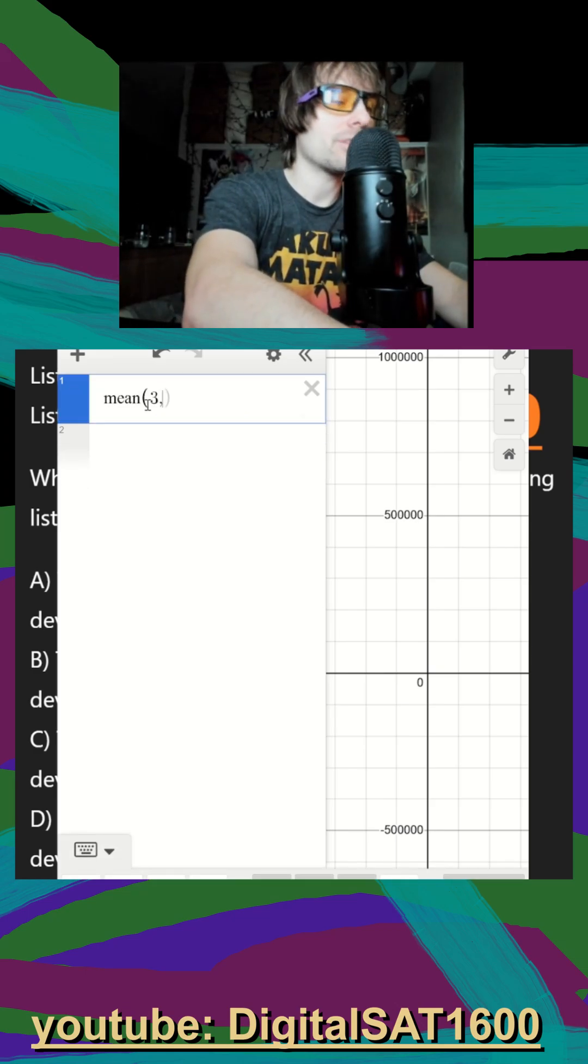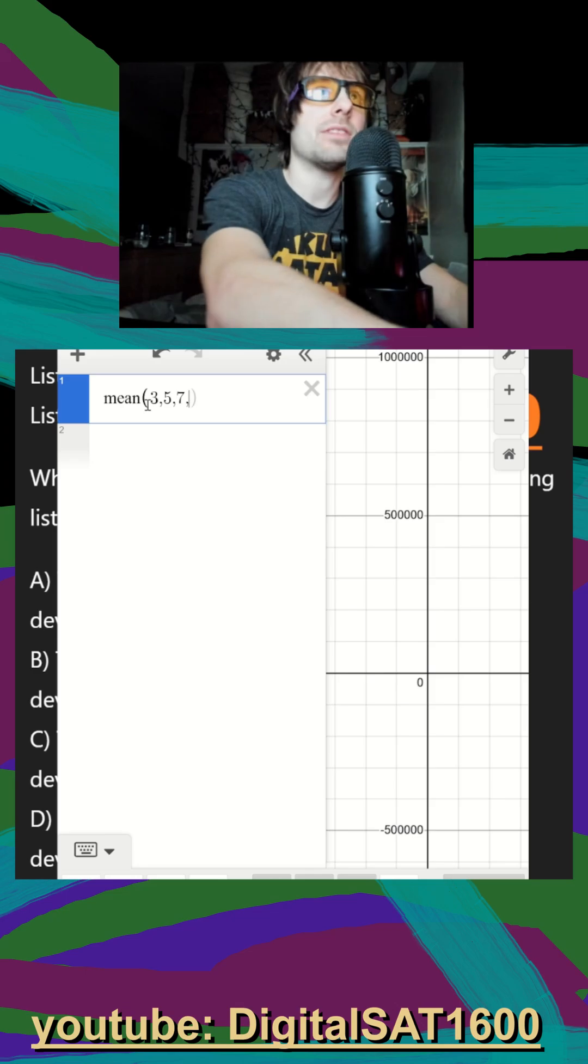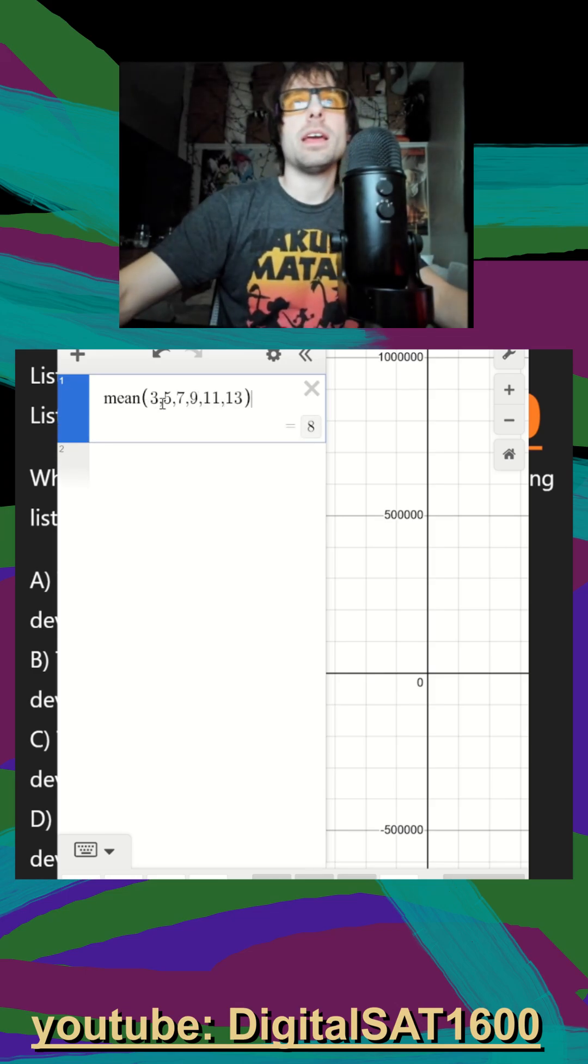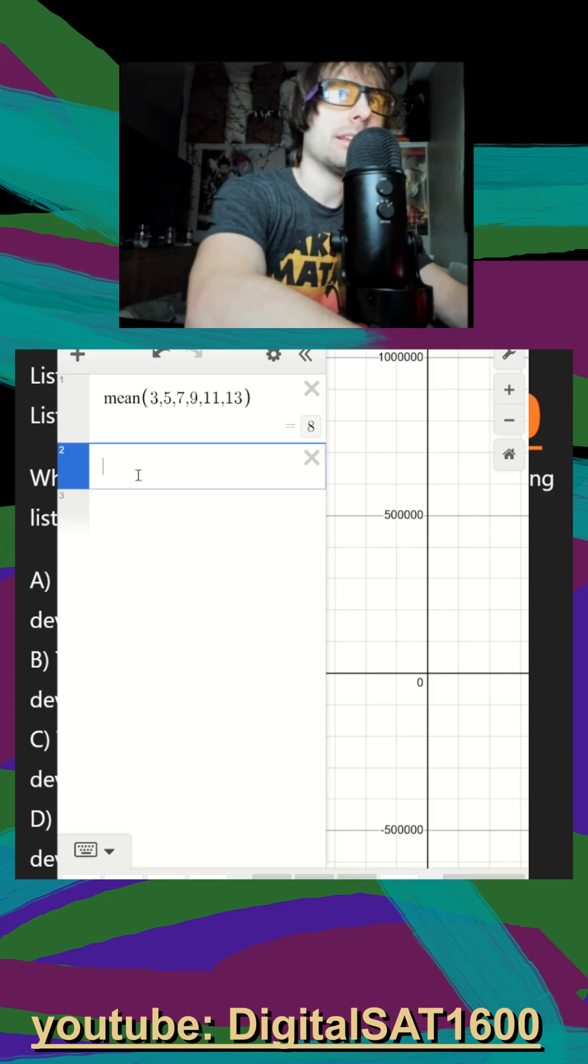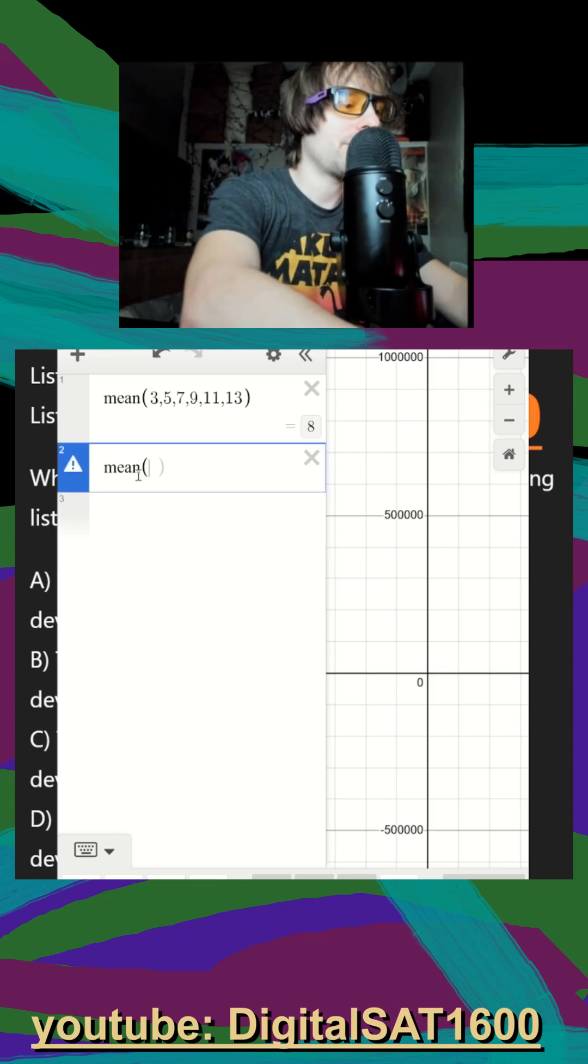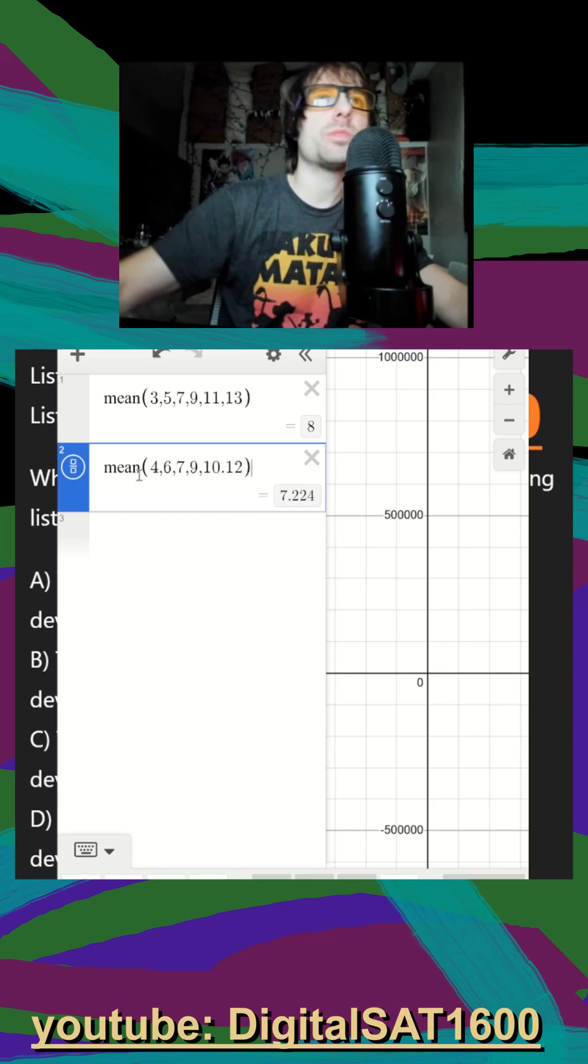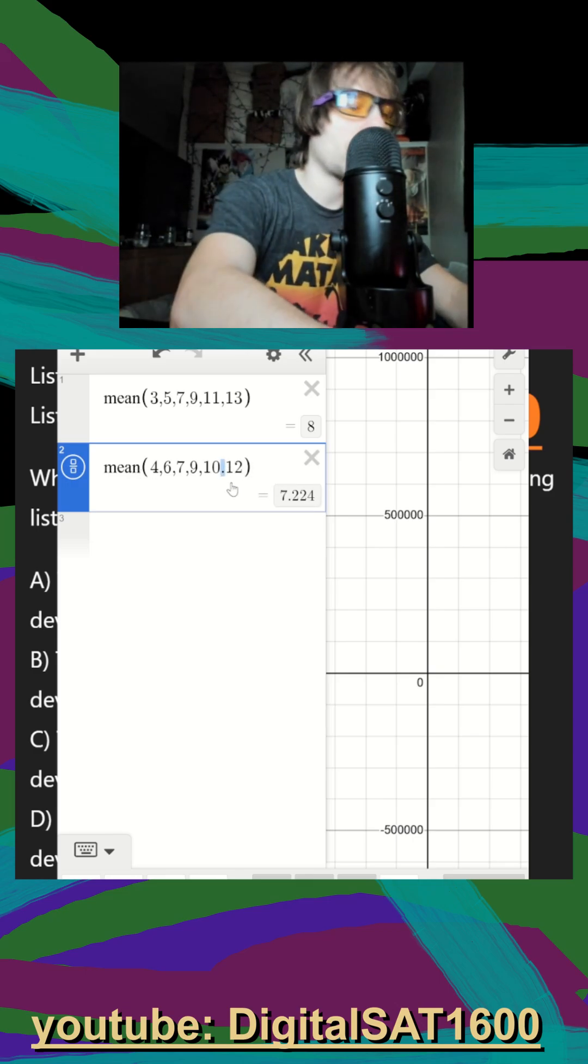Mean of my first list is 3, 5, 7, 9, 11, and 13. And my second mean list is going to be 4, 6, 7, 9, 10, and 12. Oops, that should be 10 comma 12.